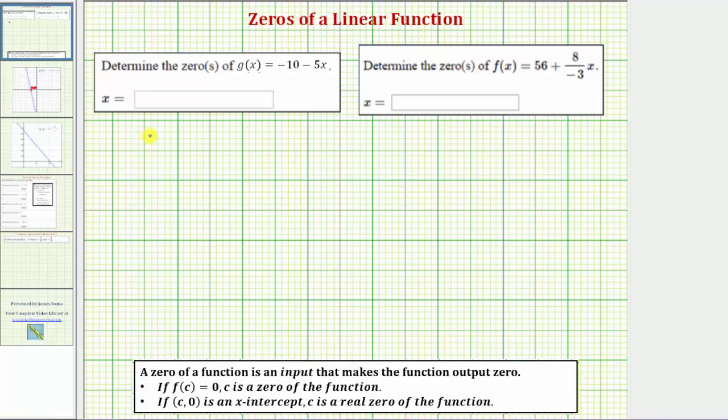Looking at our first example, we have g(x) equals negative ten minus five x. And now to find the zero of the function g(x), we set g(x) equal to zero and solve for x. By solving this equation, we'll determine the input or x value that makes the function value equal to zero.